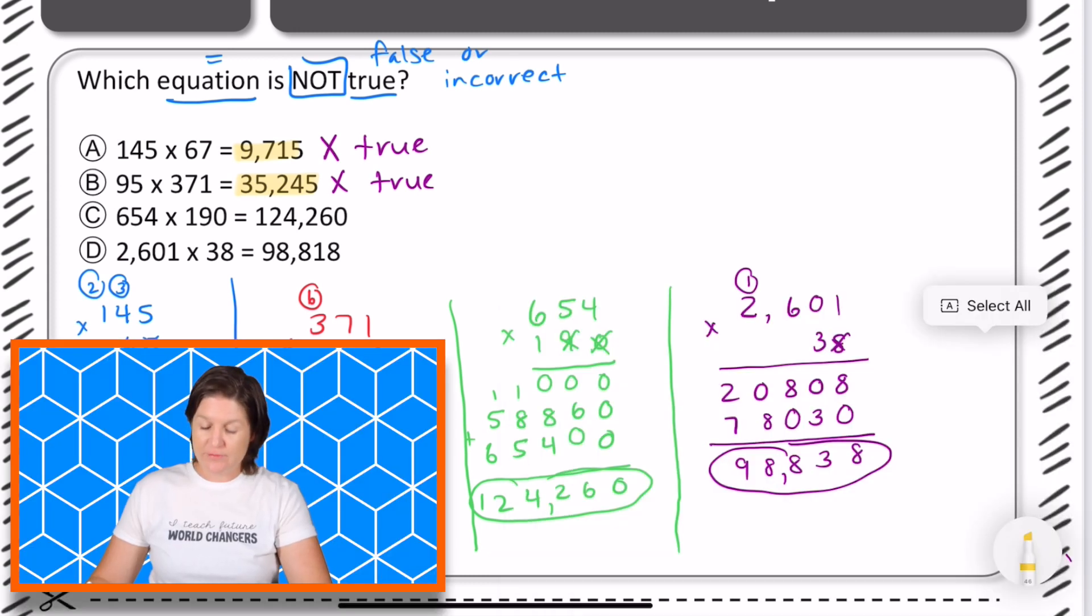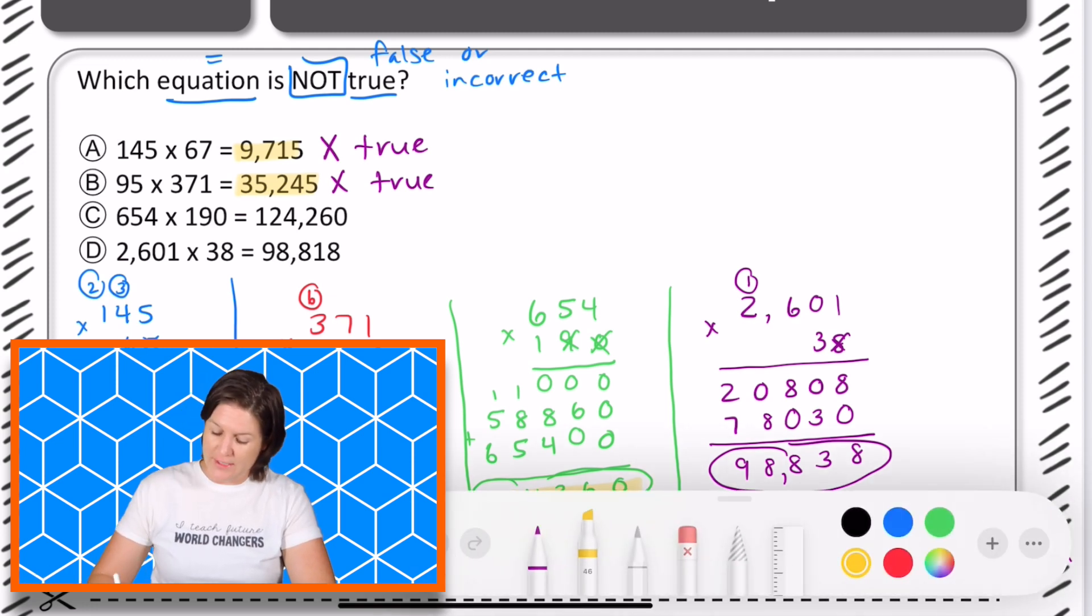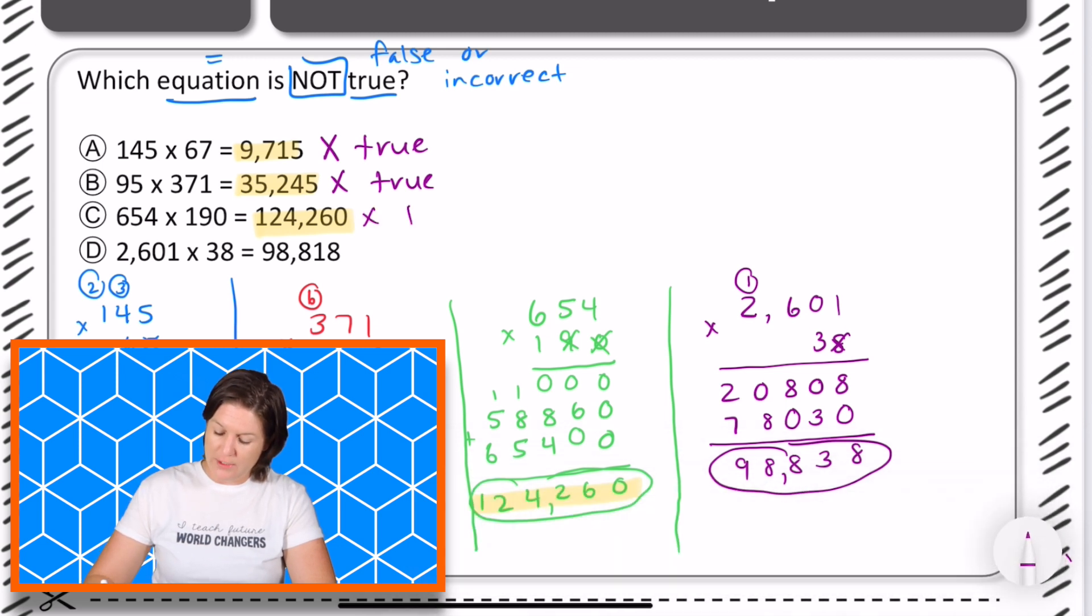For C we have 654 times 190. When I multiplied that I got a product of 124,260. Again that's what it was given here so it is true. We can eliminate it.